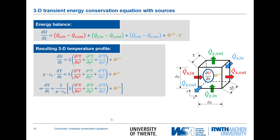Extending to three dimensions is straightforward — we add the flux terms in the z-direction as well. The process is exactly the same, and we end up with the three-dimensional transient conduction equation including all three second-order spatial derivatives of temperature.